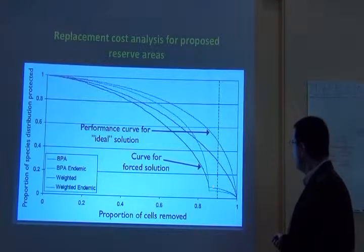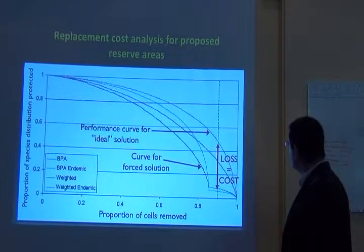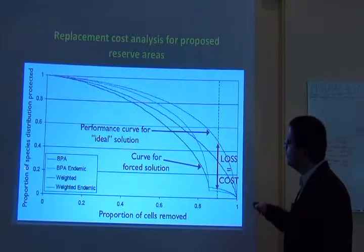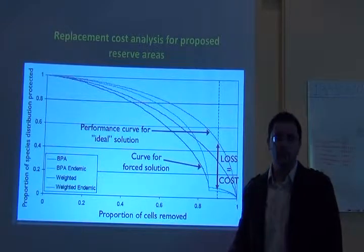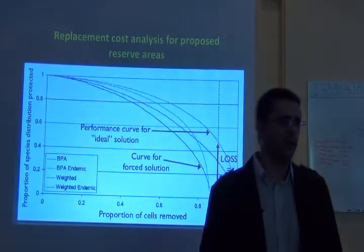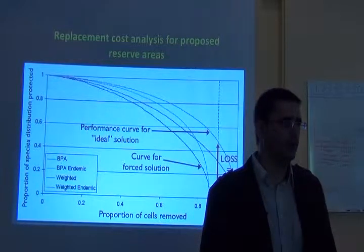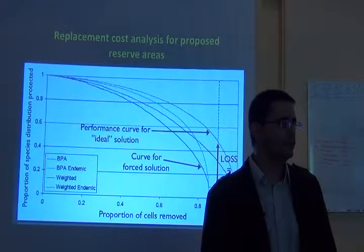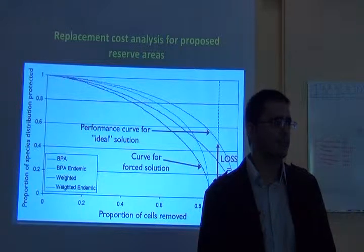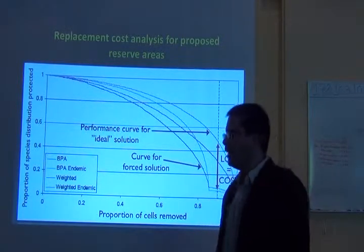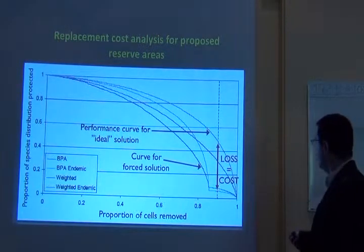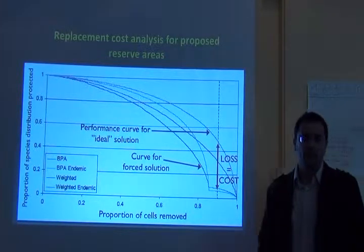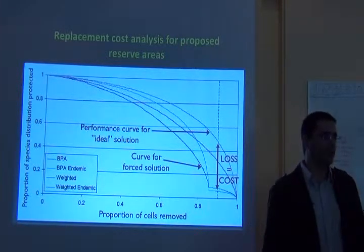So why does this happen? Why does including costs result in lower species representation than when costs are ignored? The thing is that cost is really important — it can change the solution dramatically.